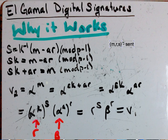So first, s, which is part of one of the things we sent here, we know that it equals k inverse times (m minus ar). So just rearranging this statement a little bit, we have sk equals m minus ar, and then moving the ar over we solve for m equals sk plus ar.